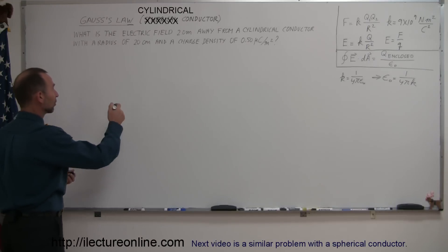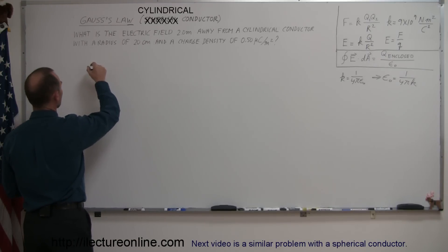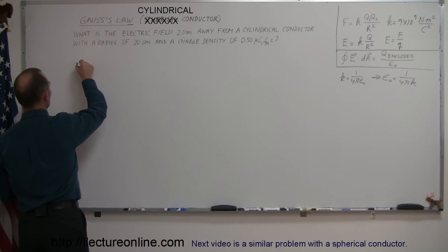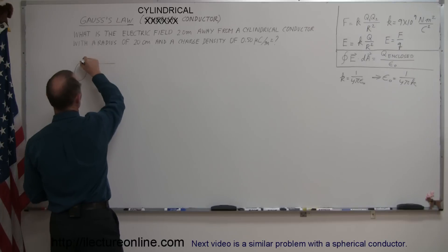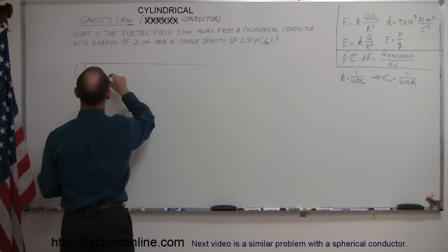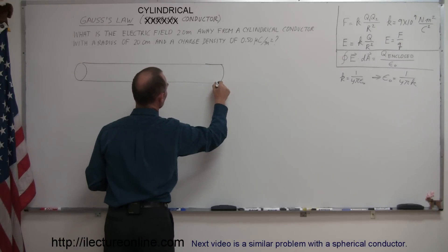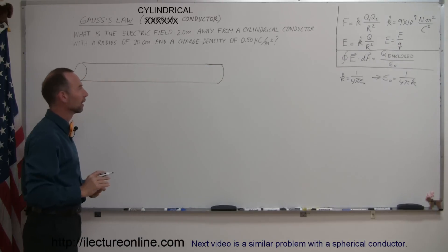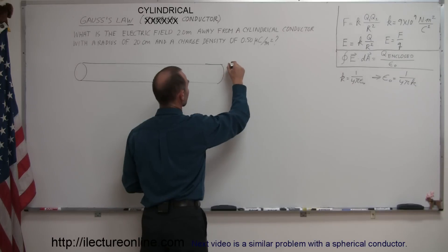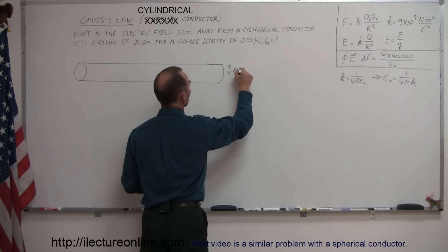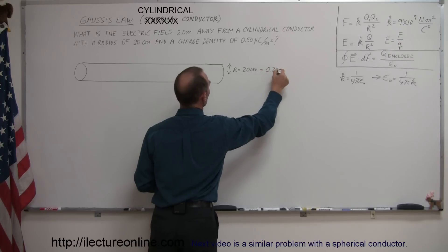First of all let's draw the cylindrical conductor. So a cylindrical conductor like so, assuming that the conductor is very long. The cylindrical conductor has a radius of 20 centimeters. The radius R is equal to 20 centimeters, which is equal to 0.20 meters.